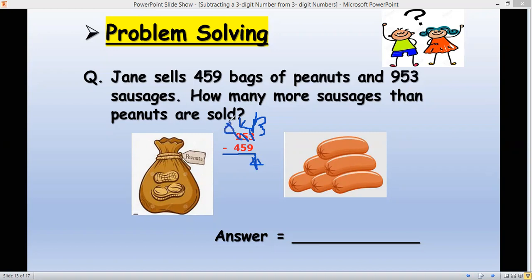So 14 minus 5 is 9. And then 8 minus 4 is 4. So let's see - it's going to be 494. Because this is bringing down 4. 8 minus 4 is 4. So there will be 494 more sausages than peanuts.